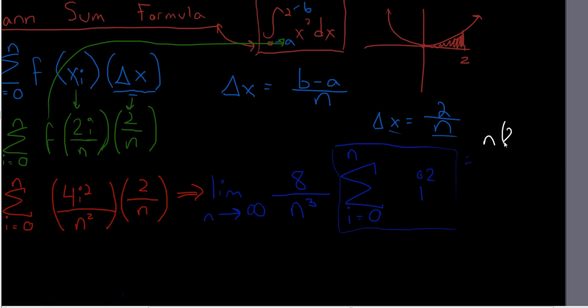n times 2n plus 1 times n plus 1. So I'll rewrite everything down here.